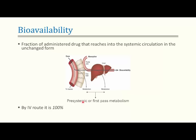This metabolism before reaching systemic circulation is called pre-systemic or first-pass metabolism. It is a major hurdle for many drugs, as 90–100% of the drug can be metabolized in the liver with no unchanged fraction available for absorption. If the drug is administered intravenously, bioavailability is 100% because it is directly injected into the bloodstream.